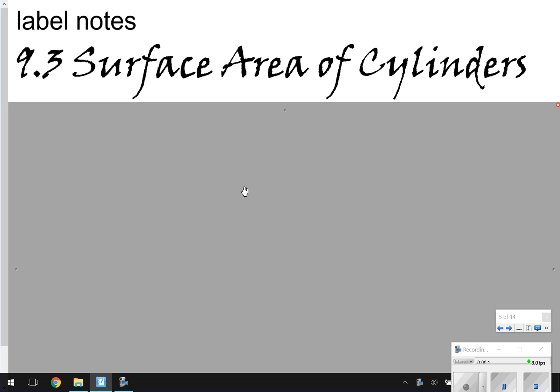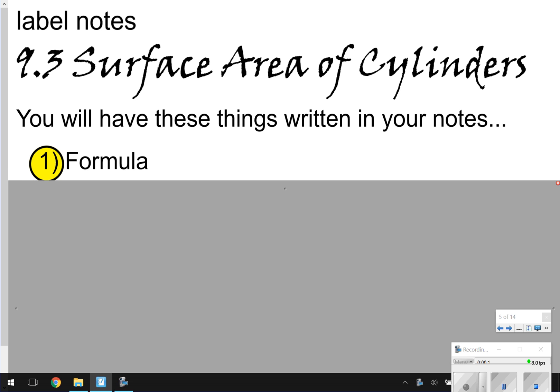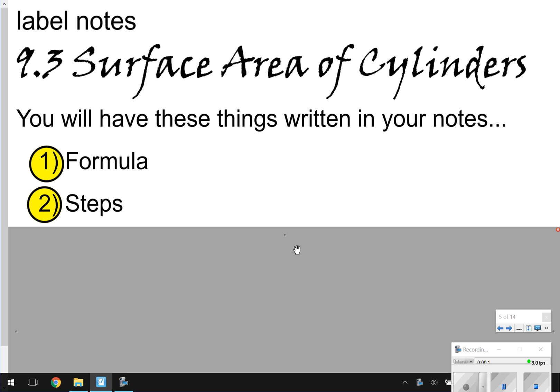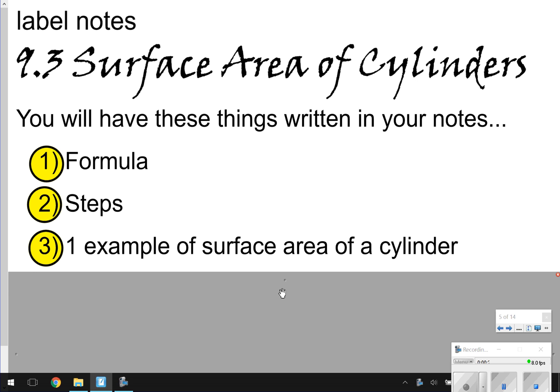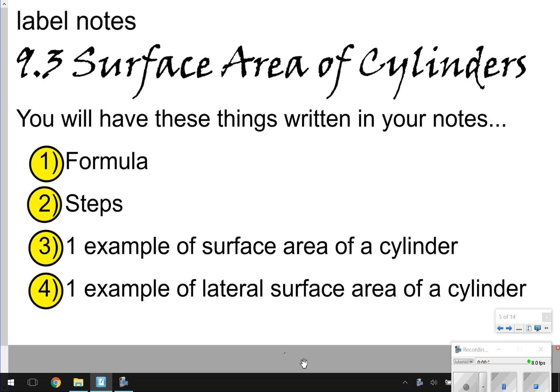After the video, you should have four things written in your notes. The first thing we're going to write is the formula for the surface area of cylinders, the steps that you'll do, one example of surface area of a cylinder, and one example of lateral surface area of cylinders. So just want to make sure we know the difference between just normal surface area and then lateral surface area. Let's go ahead and begin.